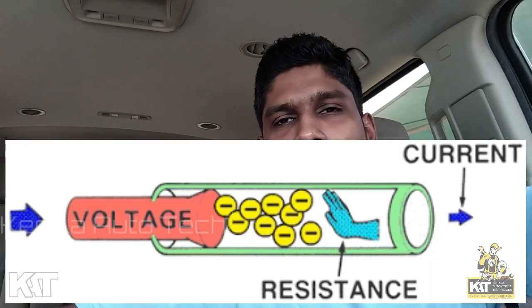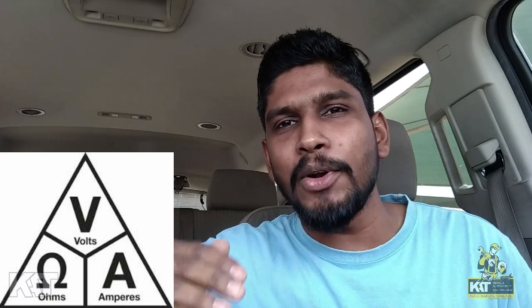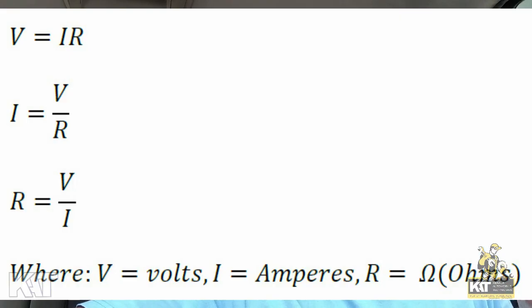What is resistance? Resistance opposes the flow of current. It depends on temperature, size, and condition of the material, and it is measured in ohms. Ohm's Law states that V equals I times R, meaning voltage equals current multiplied by resistance.